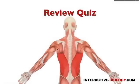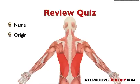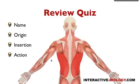Then we have the latissimus dorsi. The origins are the spinous processes of T7 through T12, the thoracolumbar fascia, the crest of the ilium (the iliac crest), and the inferior three or four ribs. It then rotates around and inserts on the floor of the intertubercular sulcus. In terms of action, we can have adduction of the arm, internal rotation of the arm, and extension of the arm.